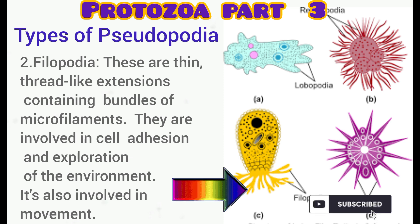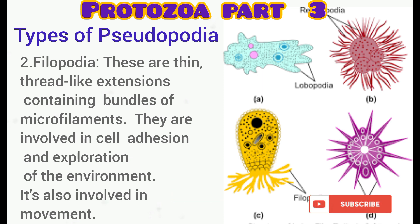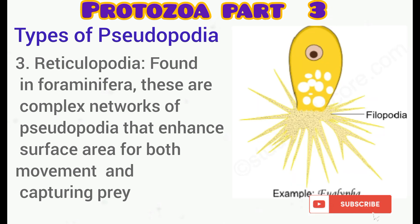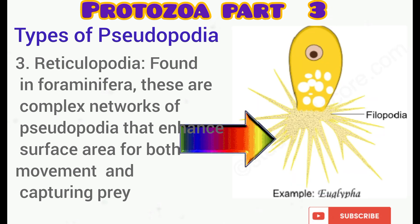The filopodia are thin thread-like extensions containing bundles of microfilaments, as you can see on the screen. They are involved in movement as well as adhesion and exploration of the environment. An example is seen in Euglypha.